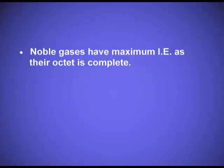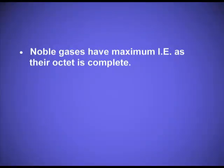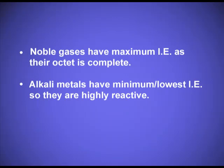Noble gases have maximum ionization energy because they have a complete octet and are in the most stable state, with eight electrons in their outermost shell. To disturb this stable configuration obviously requires much higher energy. The alkali metals have minimum or the lowest ionization enthalpy because each alkali metal has the largest atomic radii in their respective period and has only one electron in their valence shell.